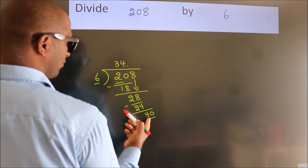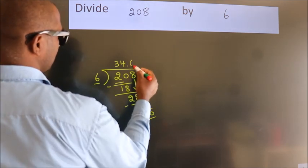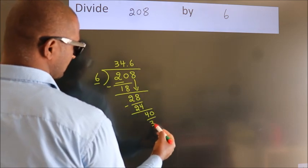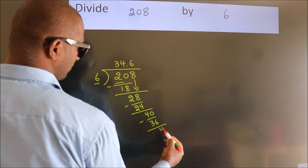A number close to 40 in the 6 table is 6 times 6 equals 36. Now we subtract. We get 4.